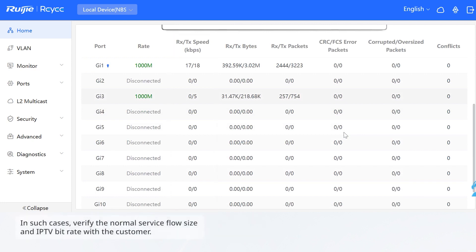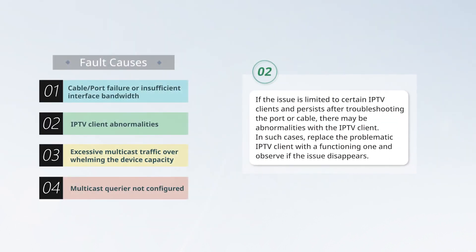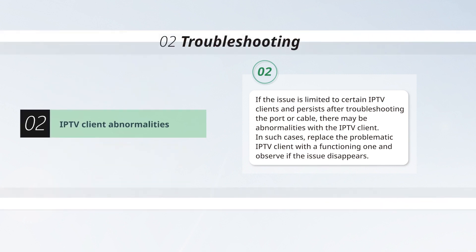In such cases, verify the normal service flow size and IPTV bit rate with the customer. If the flow size is normal, please contact technical support to assess if the device has sufficient capacity. If the issue is limited to certain IPTV clients and persists after troubleshooting the port or cable, there may be abnormalities with the IPTV client. In such cases, replace the problematic IPTV client with a functioning one and observe if the issue disappears.